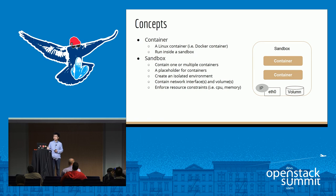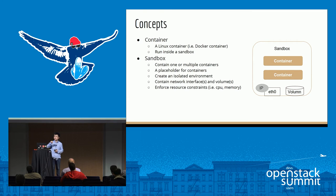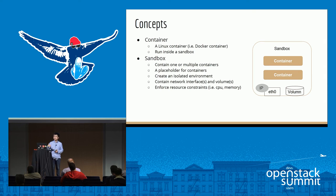Here is a key concept in Zun: it has containers, but it also has a sandbox. A container is a Linux container like Docker. But a container has to run inside a sandbox. A sandbox can hold one or multiple containers. A sandbox is created to serve as a placeholder for the containers — it creates an isolated environment for all containers inside the box. The sandbox can have a network interface and volumes, and these resources are shared by all containers in the box. A sandbox can also enforce resource constraints, such as setting a CPU or memory limit so the aggregate resource consumption of all containers cannot exceed that limit.